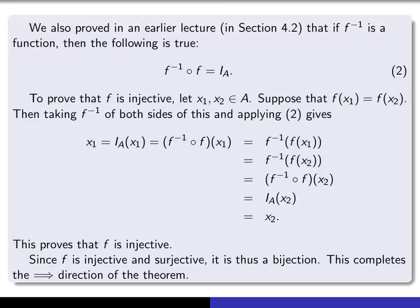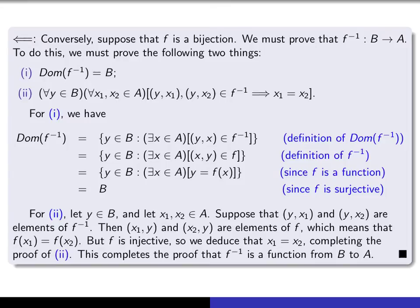We've now proved f is injective and surjective, so that completes the proof that f is a bijection. Now the other half of the proof asserts that if f is a bijection, then f inverse is a function from B into A. So we assume that f is a bijection and have to prove that f inverse is a function from B into A.